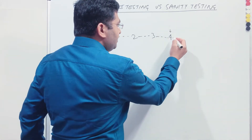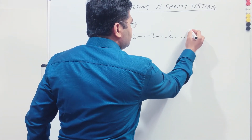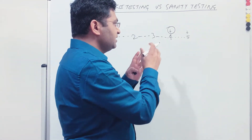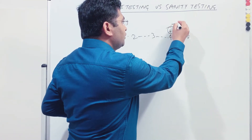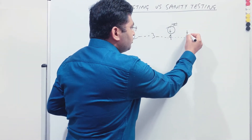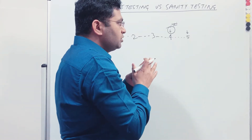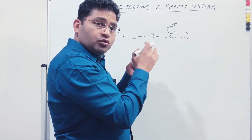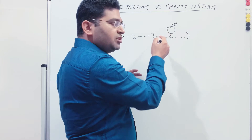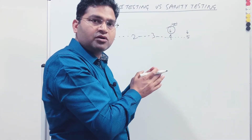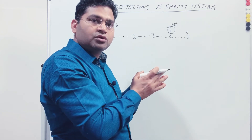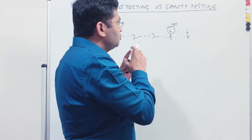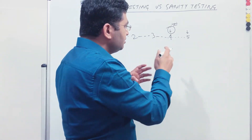Developers will fix those defects and provide a new build. Say the defects were raised for the login module of the application. In build 5, when the new build drops, because there is a change in the login module — a fix was applied — the overall package has been updated. You might be required to do regression testing of the existing functionalities to ensure they are still working as expected.